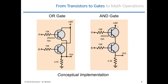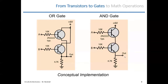An AND gate would look like this — you have current going through cascaded transistors. The only way you'd get an output equal to one is if both transistors were saturated. If only one is saturated and the other is in cutoff, there's a broken connection between the output and the power supply voltage. But if both are saturated, there's a connection through both transistors to the output. So you'd have to have both A and B equal to one to get a one at the output. This gives you a couple examples of going from transistors to gates.